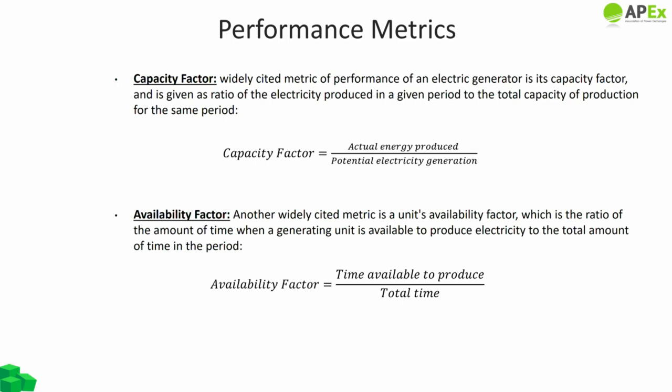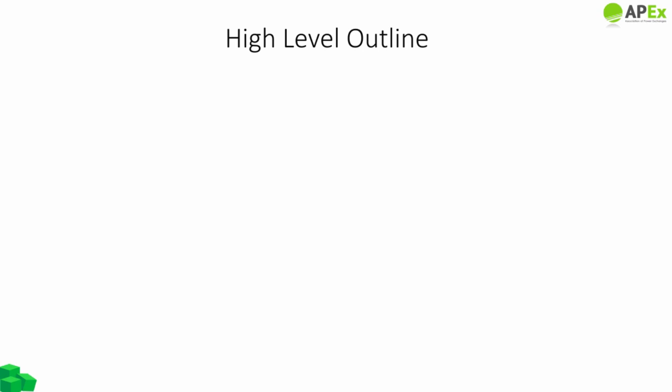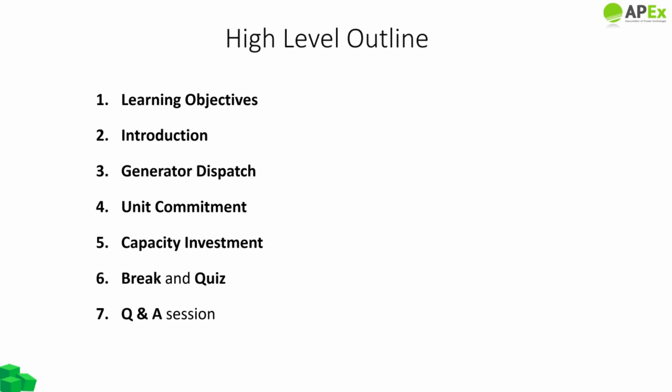Capacity factor is a widely used metric given as the ratio of electricity produced in a given period to the total capacity of production for the same period. Another important metric is the availability factor — the ratio of the amount of time a generating unit is available to produce electricity to the total amount of time in the period. With this quick recap, let's start today's session on economic optimization of the power system, going through the outline as shown on screen.